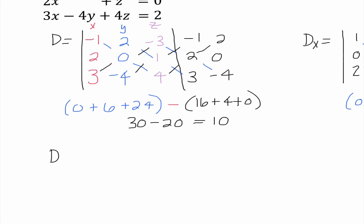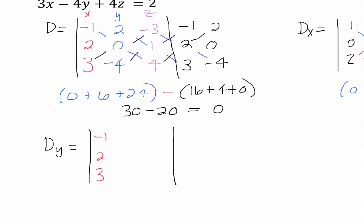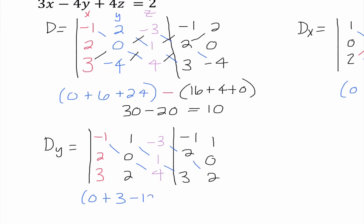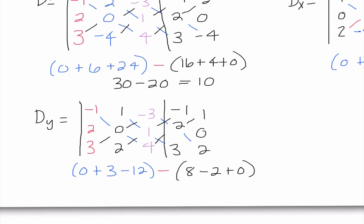Next, D sub y. My x column goes back to negative 1, 2, 3. I'm replacing the middle column with the constants 1, 0, 2. The third column is still the z's: negative 3, 1, 4. Rewriting first two columns and starting top left: negative 1 times 0 times 4 is 0. 1 times 1 times 3 is 3. Negative 3 times 2 times 2 is negative 12. Mr. Determifish says subtract, baby. 1 times 2 times 4 is 8. Negative 1 times 1 times 2 is negative 2. Negative 3 times 0 times 3 is 0. I end up getting negative 9 minus 6, which is negative 15.